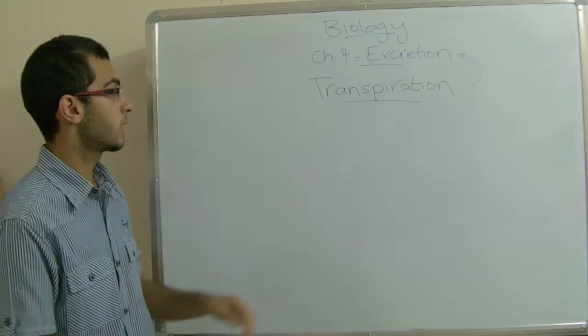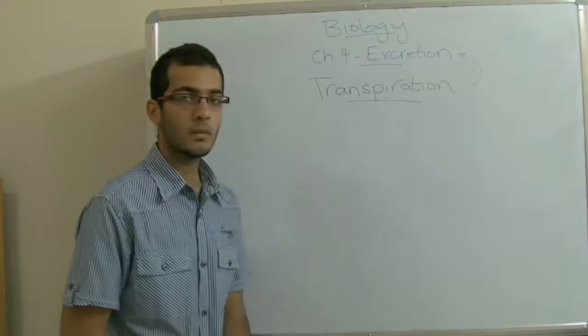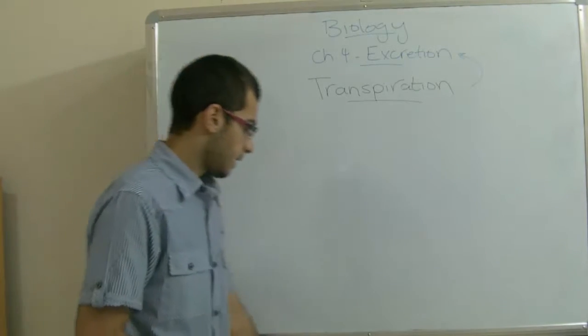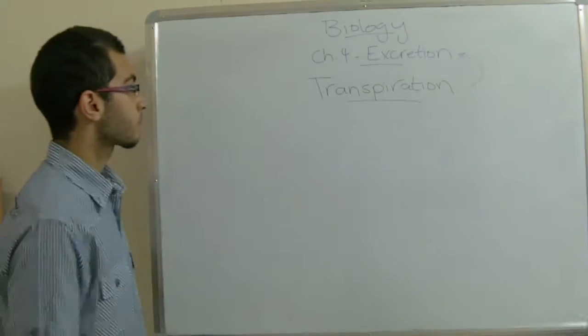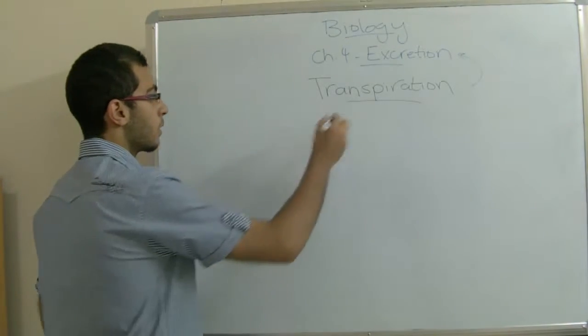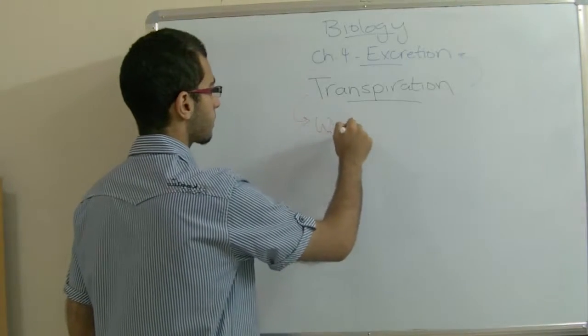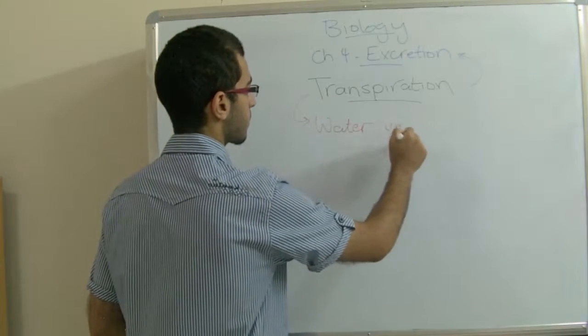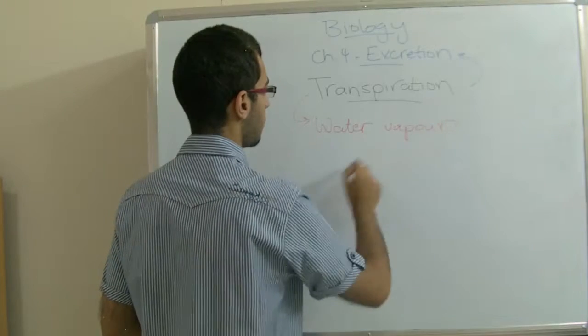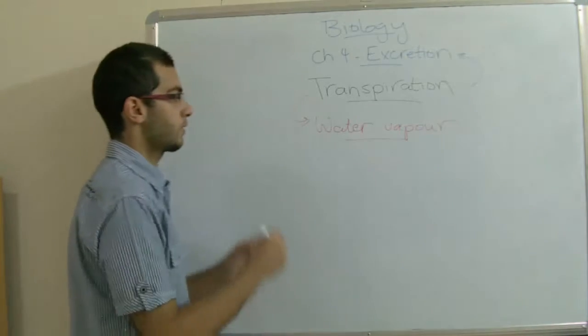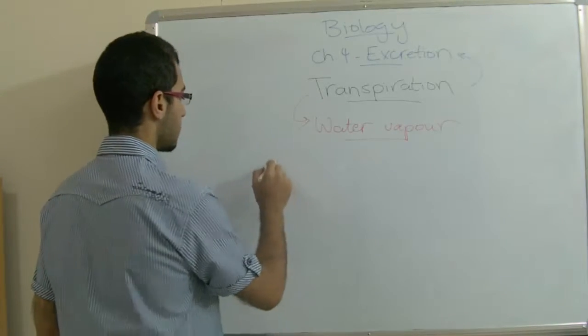The stomata are where the water is excreted by transpiration. So the water vapor which is excreted by transpiration has three types.